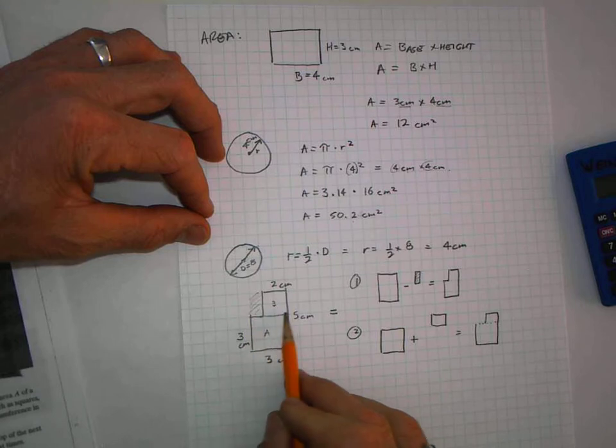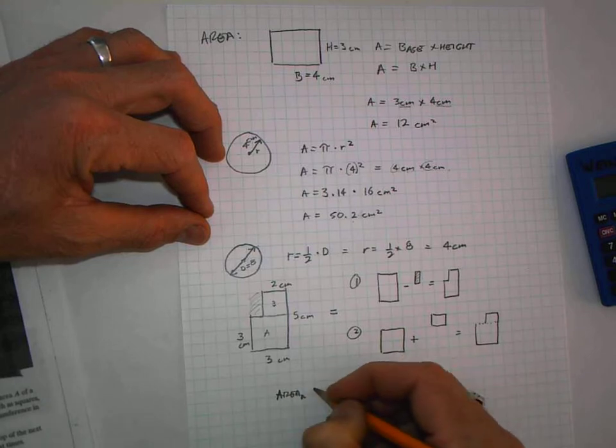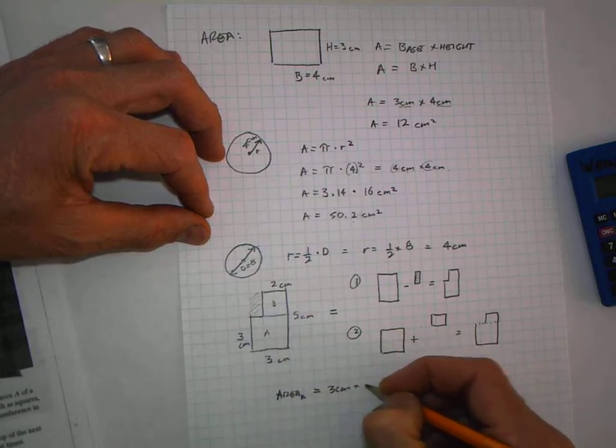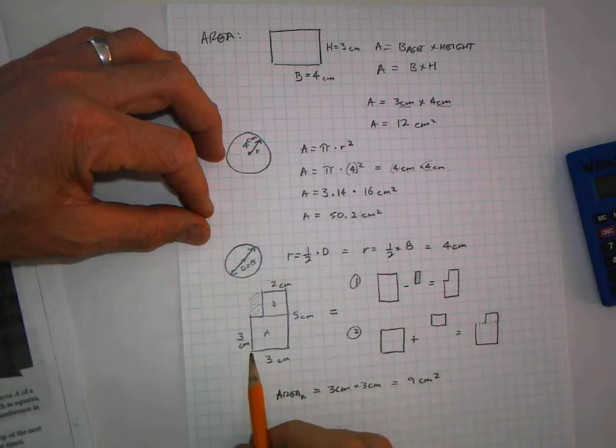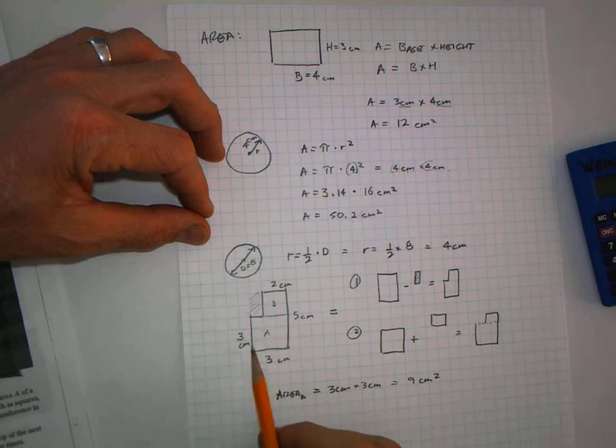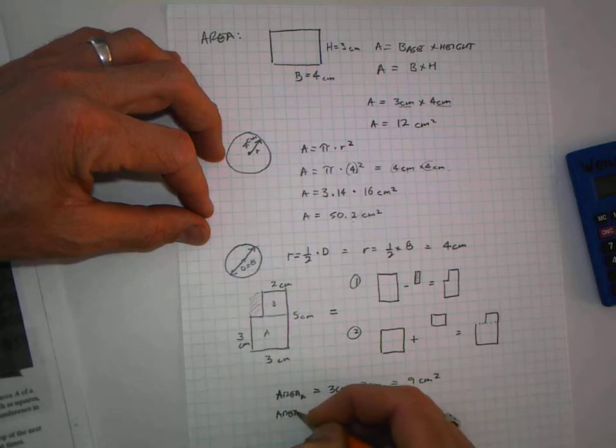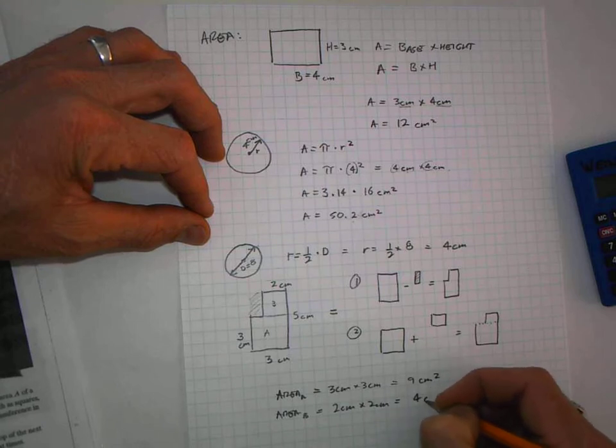What's the area of square A? Area of A is 3 cm × 3 cm = 9 cm². What about B? This is 3, this is 5, so this is 2. Rectangle B is 2 cm × 2 cm = 4 cm².